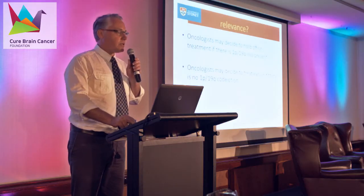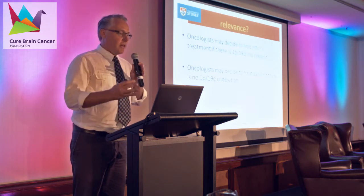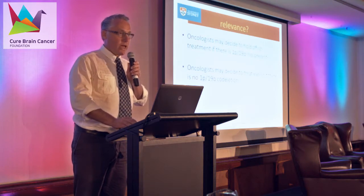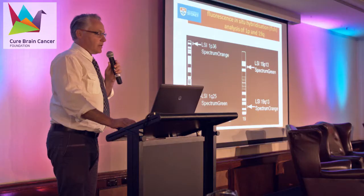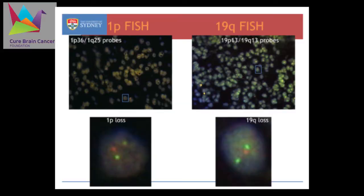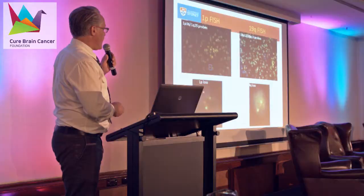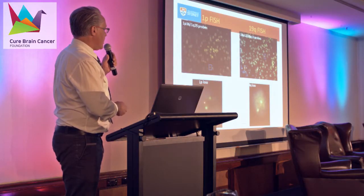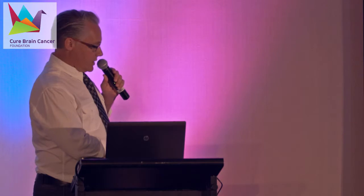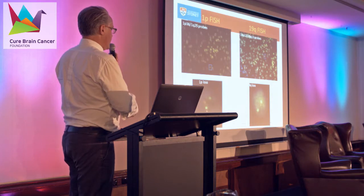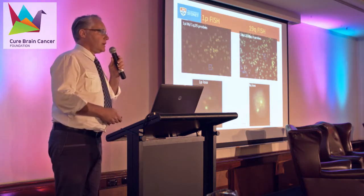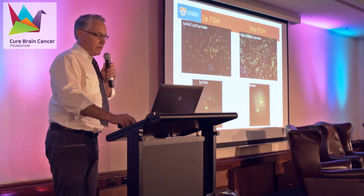Every oncologist has their own way of deciding, and there are many factors involved in the decision of how and when to treat. Without going into exactly how we test for it, I will say we get some very pretty fluorescent photographs. You can see a cell here with one red dot and two green dots — the red dot is 1p and the green dot is the other part of chromosome 1, which is 1q. We can see that we've only got one copy of 1p but two copies of 1q, so there's a relative 1p loss. That's how we assess it in our path lab.